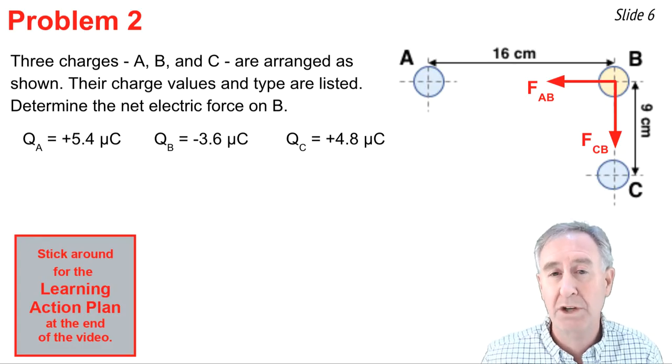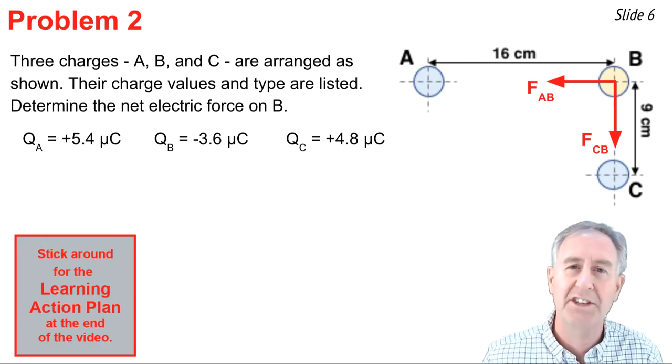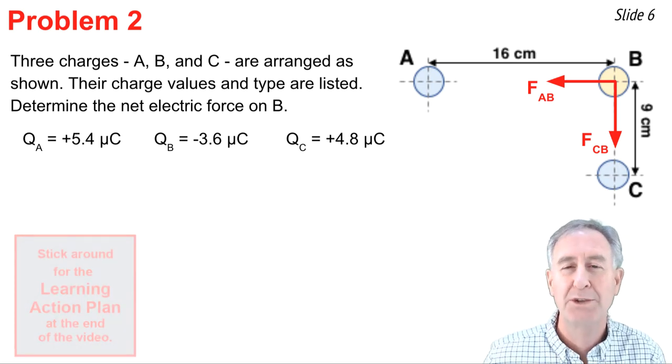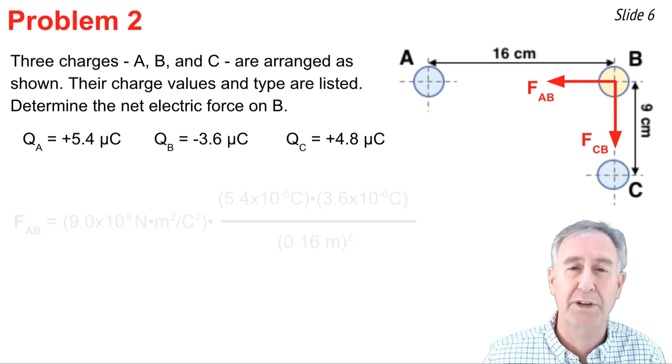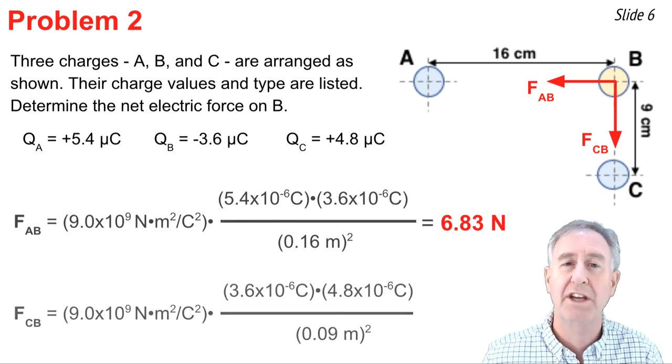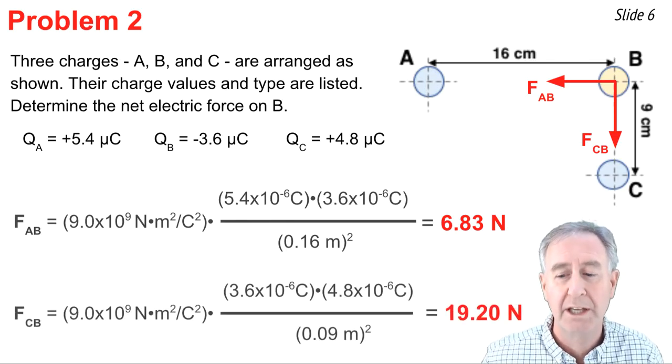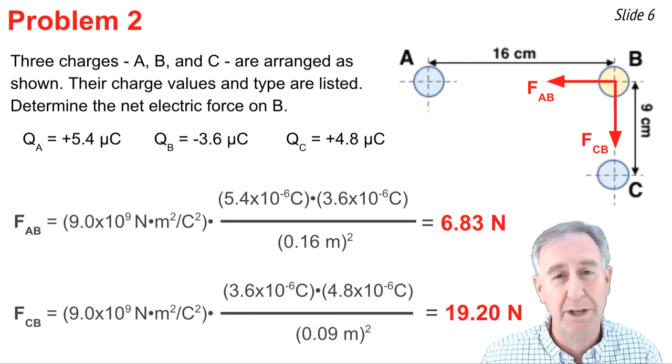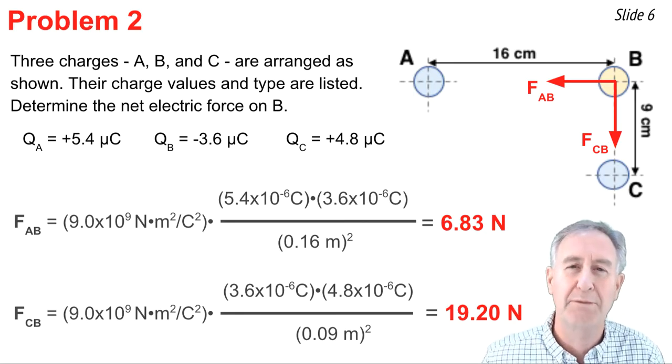Now the quantities of charges here in this problem and the separation distance are exactly the same as they were in problem one. So we'll go through this a little bit faster since we've done it already. Here's how you calculate the force of A on B and here's how you calculate the force of C on B. You get of course the same values that we got in problem one since the given information is the same.